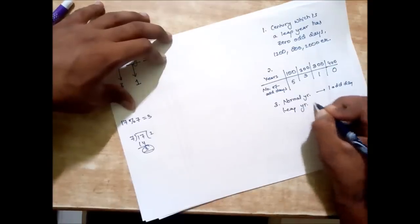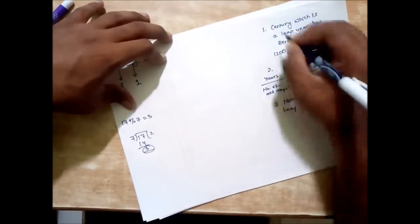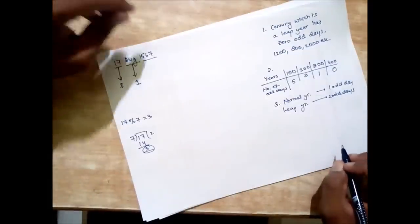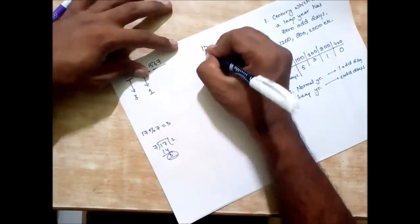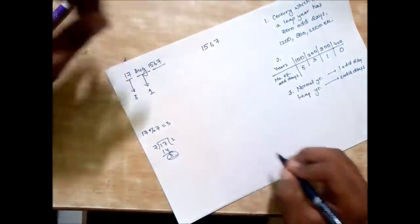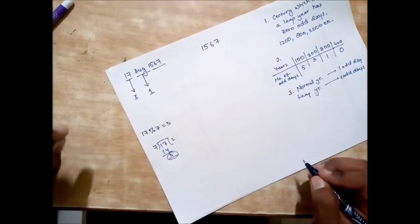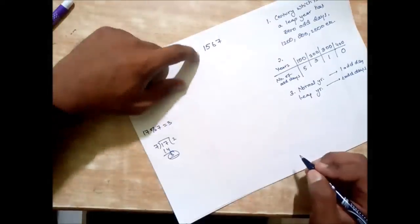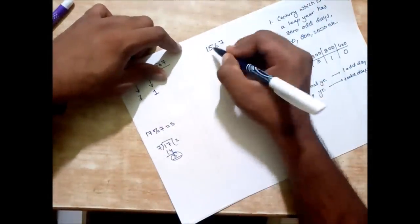These three points you need to remember in order to solve the year. So we have the year as 1567. First step is going to be that we need to find the largest century year which is a leap year according to this date.